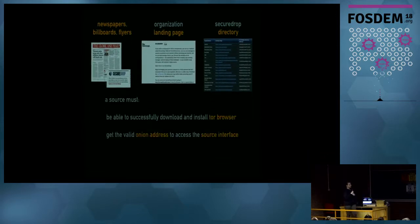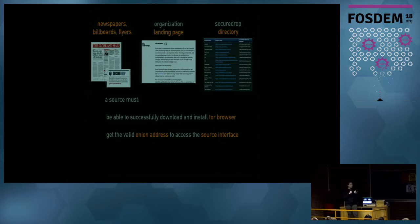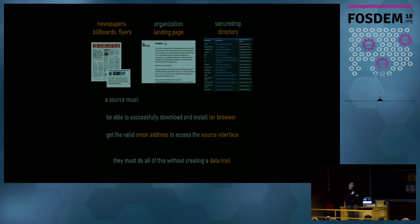That directory is also available over Tor Onion Services. The goals are that sources must be able to successfully download and install Tor Browser, get the valid Onion address to access the source interface, and do all of this without creating a data trail. You could imagine other ways people might find out about SecureDrop — like searching Google — but that creates a data trail, and there's not a lot we can do other than encouraging people to use these controlled channels.